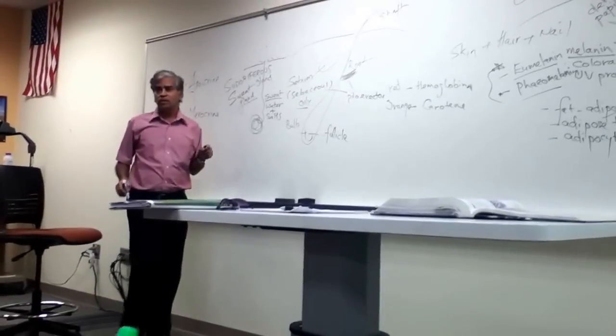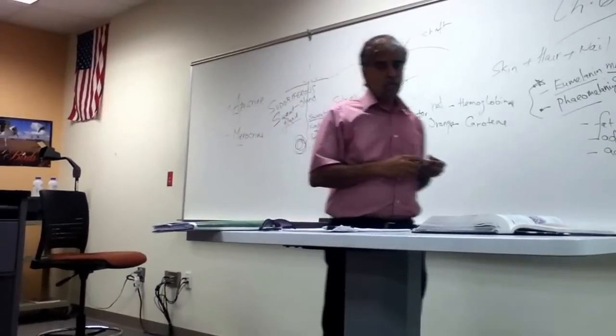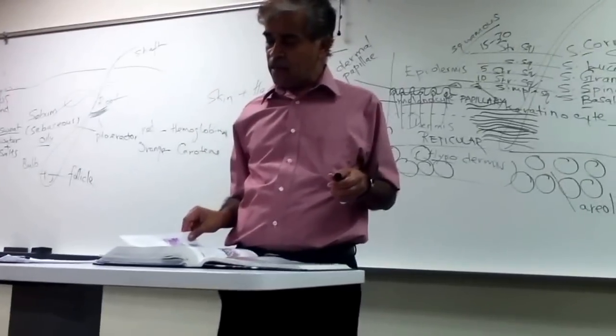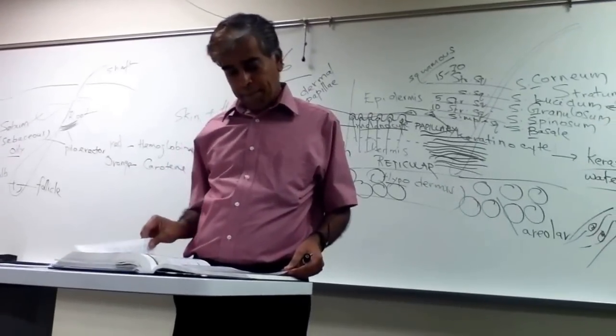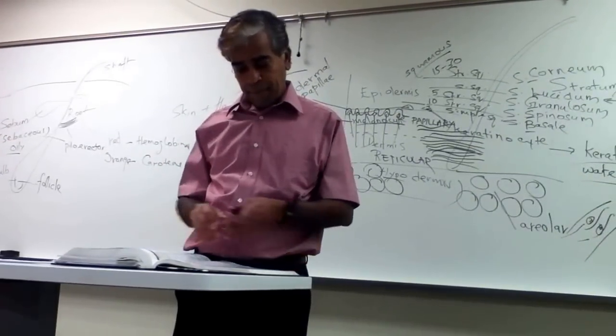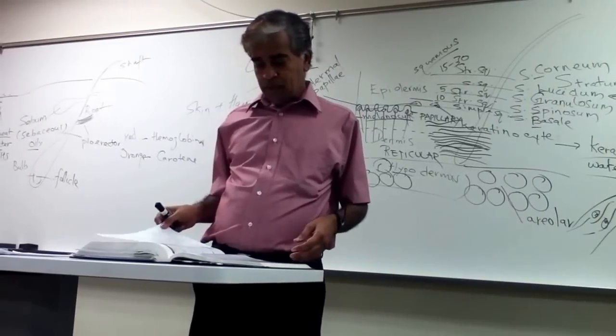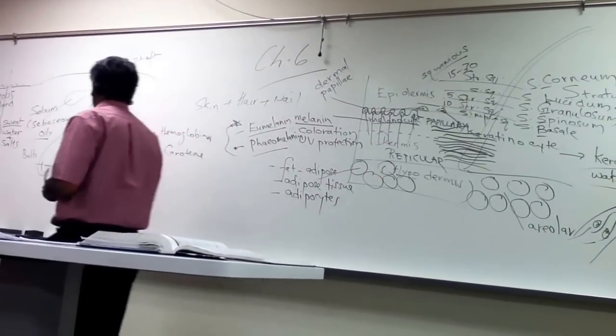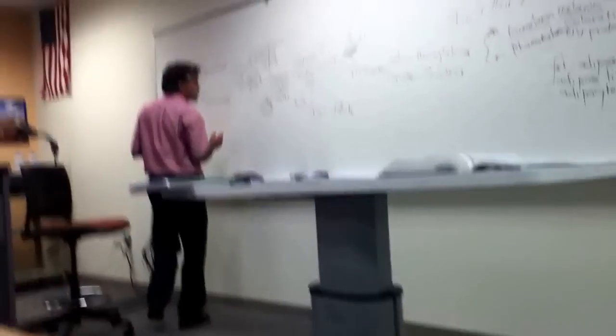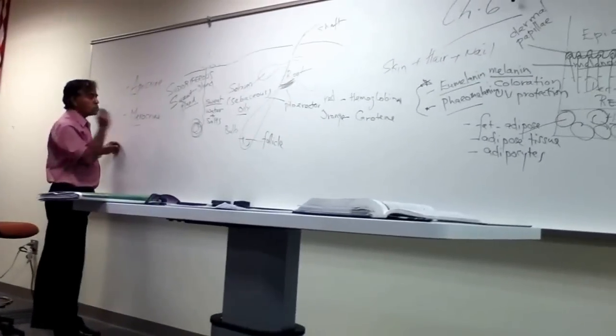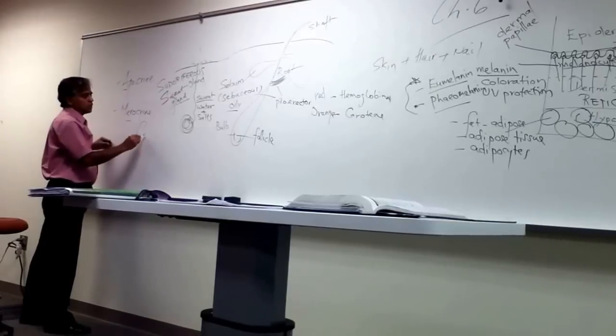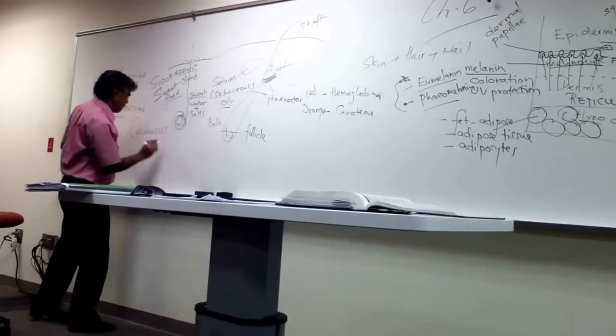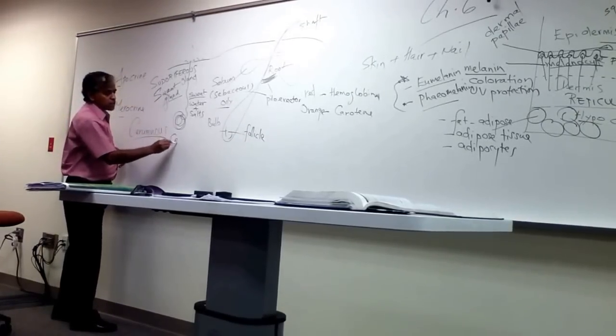Merocrine is most common all over the body. Apocrine you find in the genital areas, groin, anal region, axilla, and areola. We did the sebaceous glands. Then you have mammary glands that secretes milk to feed the baby. And then also in your ear, you have another type of glands that secretes the earwax, ceruminous gland. And the earwax is called cerumen.